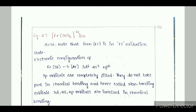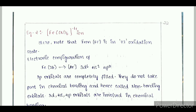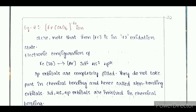Another example: note that iron is in the +2 oxidation state. Electronic configurations of iron, atomic number 26: argon 3D6, 4S2, 4P0.